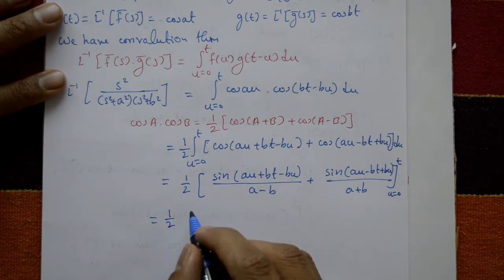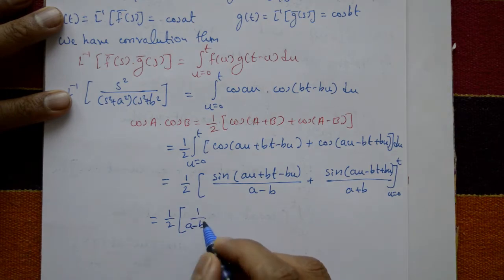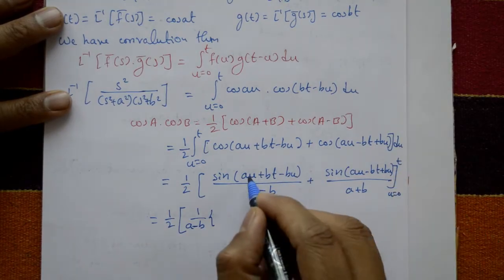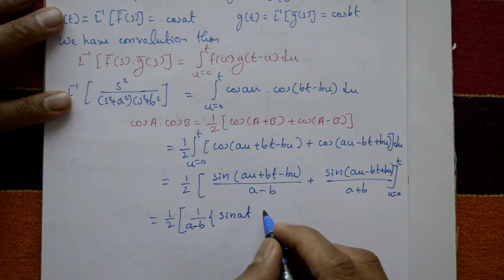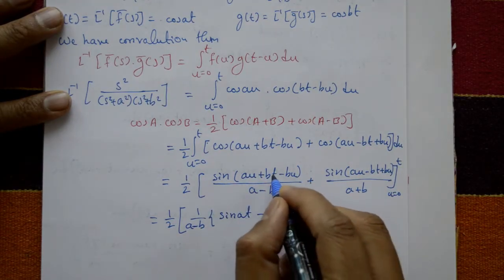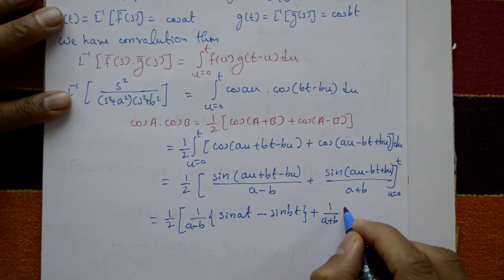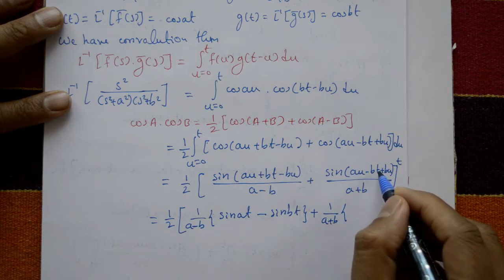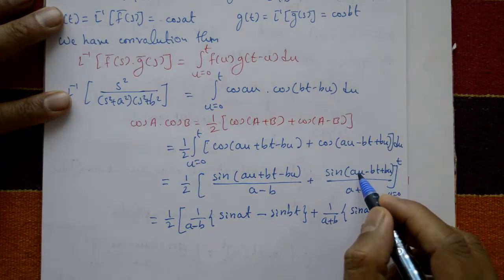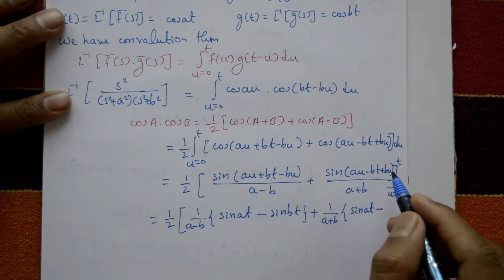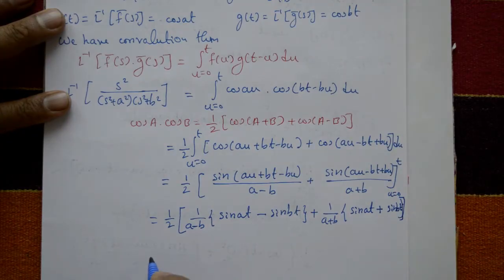Applying the limits: at u=t, the first term gives sin(at − bt + bt) = sin(at), and at u=0 it gives sin(−bt) = −sin(bt). For the second term, at u=t we get sin(at + bt − bt) = sin(at), and at u=0 we get sin(−bt) = −sin(bt), so minus times minus gives plus sin(bt).